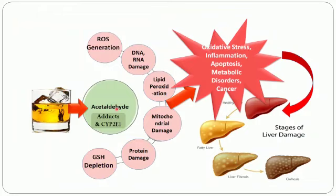Because of acetaldehyde and CYP2E1, apart from steatosis, various reactive oxygen species are generated, which cause damage to DNA and RNA, lipid peroxidation, and mitochondrial damage. Proteins are damaged and there is depletion of glutathione, an enzyme of the antioxidant system. Together, all this leads to oxidative stress, inflammation, apoptosis, metabolic disorders, and may ultimately lead to cancer.